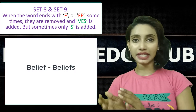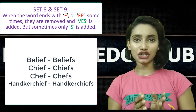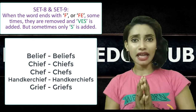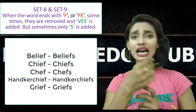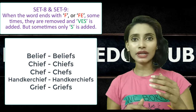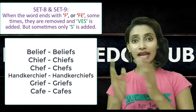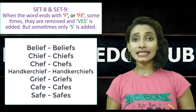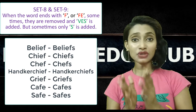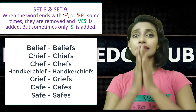And look at set 9: belief, beliefs; chief, chiefs; chef, chefs; handkerchief, handkerchiefs; grief, griefs. These nouns end in F and though preceded by vowels or consonants, they take only S with no replacement. And for words ending in FE: cafe, cafes; safe, safes — they also take only S. So sets 8 and 9 have no rule to differentiate them — only practice, by reading newspapers and books.